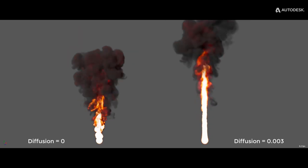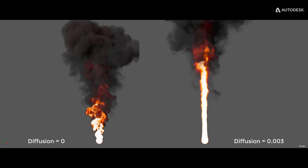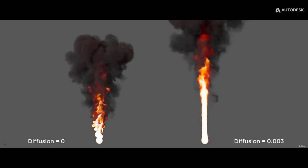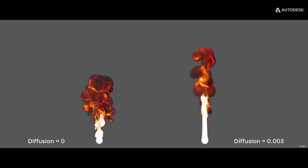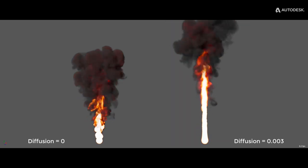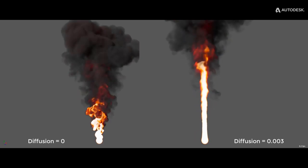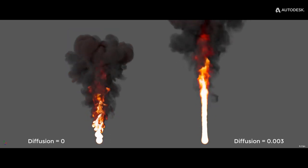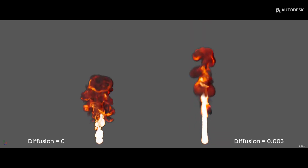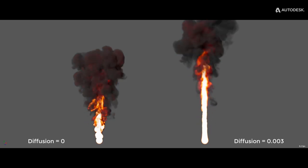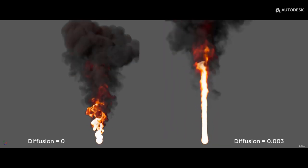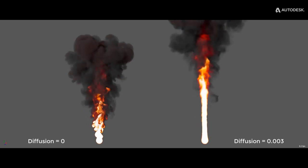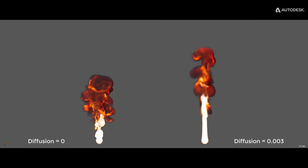The second mechanism is conduction — a diffusion process between two materials of different temperature in contact, causing the temperature to even out between them. In the comparison shown, a simulation on the right has a tiny amount of temperature diffusion added (a value of 0.003 in Bifrost). Near the base of the simulation, the flow is calmer and the temperature distribution is smoother, though it rises faster because there's less turbulent motion near the base.